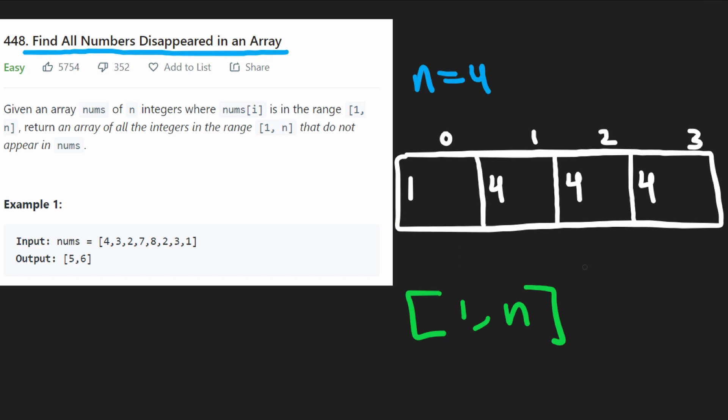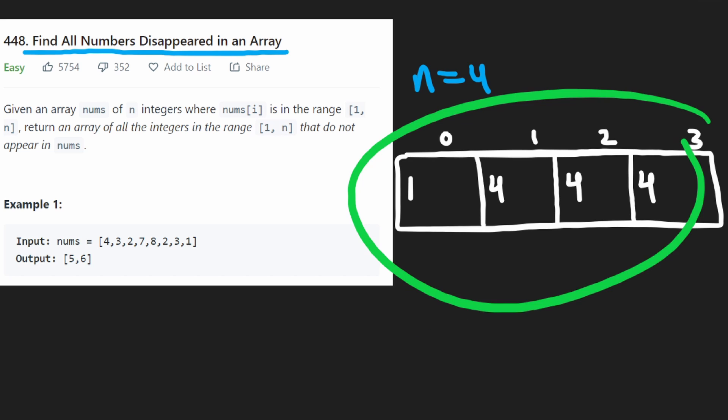Well, the good thing is that the range of values we could have is between one through N and the range of indexes we could have is in the range zero through N minus one. So there's a direct one to one mapping. The value one maps to index zero, the value N maps to the index N minus one. Okay, so we have our mapping, but how can we solve this problem now?